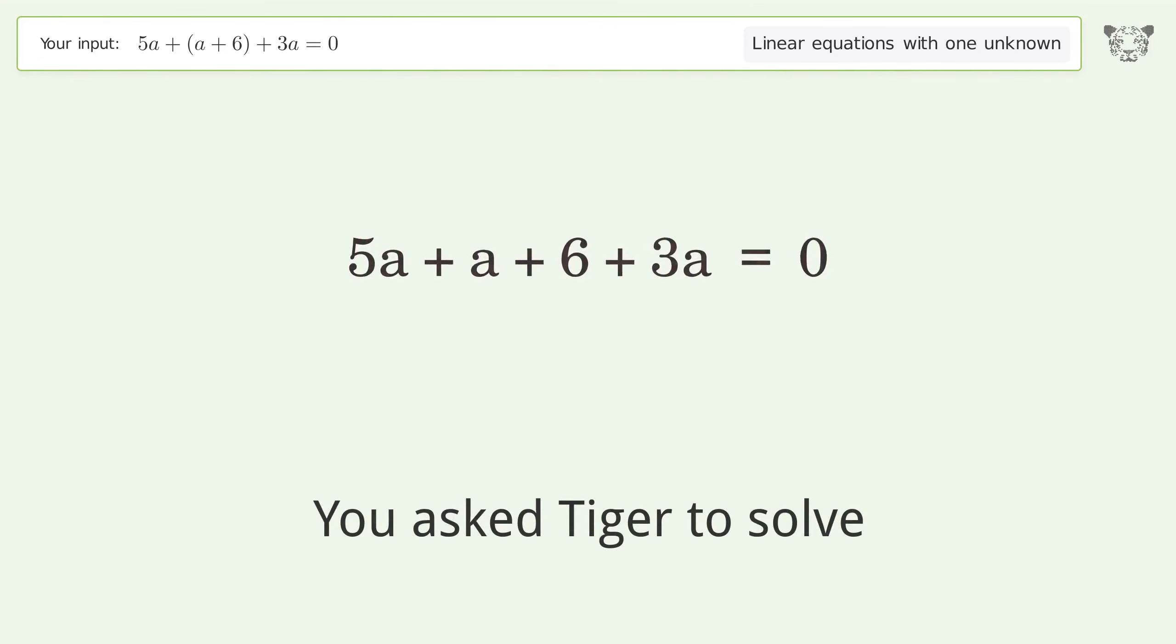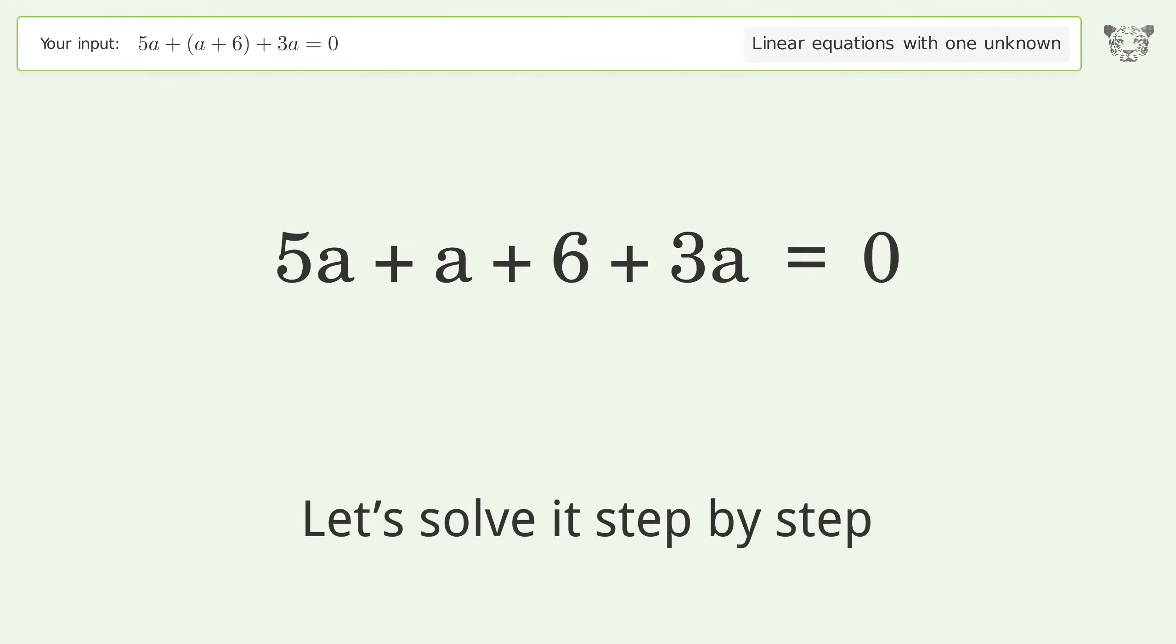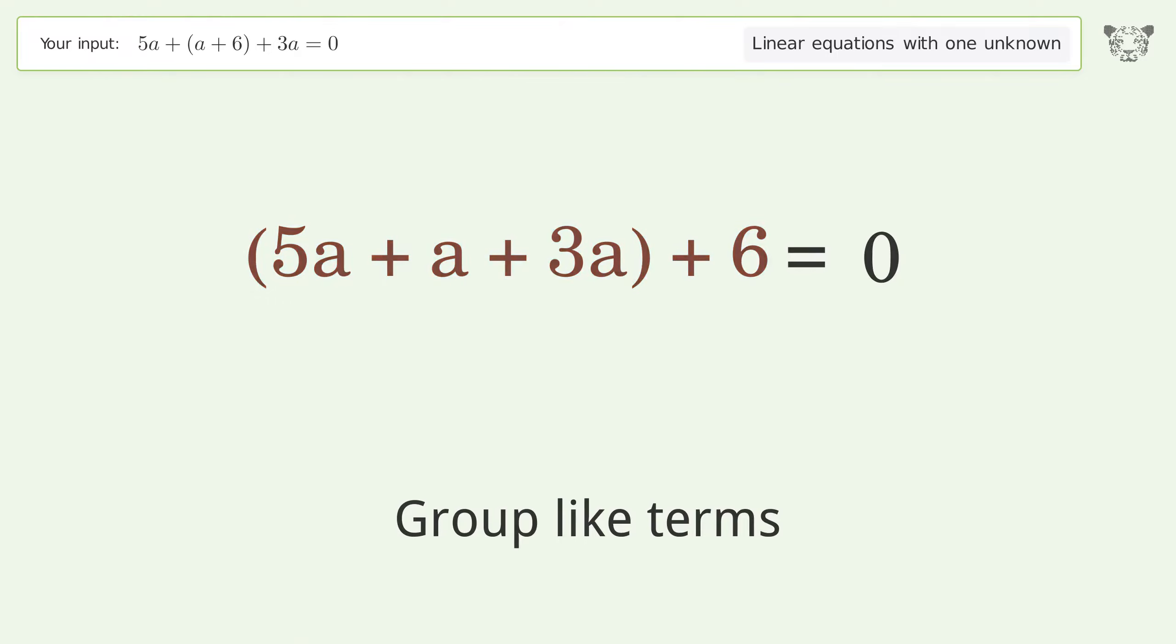You ask Tiger to solve this linear equation with one unknown. The final result is a equals negative 2 over 3. Let's solve it step by step. First, simplify the expression by grouping like terms, then simplify the arithmetic.